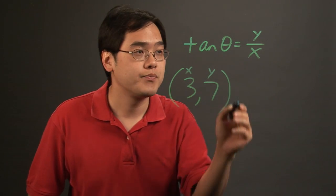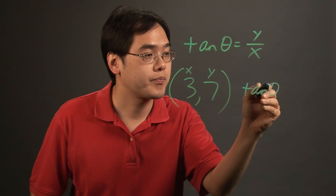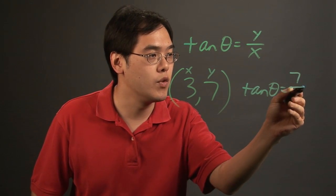What you want to do to figure out the angle is just plug it into this particular formula. So you have tangent of theta is equal to 7 over 3.